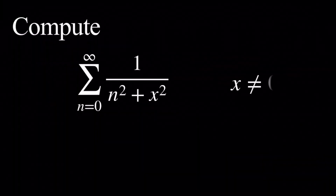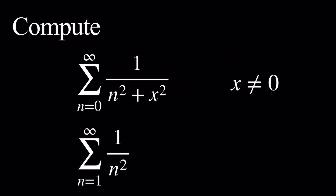Hello everyone and welcome. In this video, we're going to compute the following two sums. The first sum is the sum from 0 to infinity of 1 over n squared plus x squared, where x is a non-zero real number. The second sum is the sum as n goes from 1 to infinity of 1 over n squared. We're going to obtain the second sum using the first sum. We'll denote the first sum by s of x, and the second one is simply zeta of 2. We're going to compute the first sum using Fourier series.